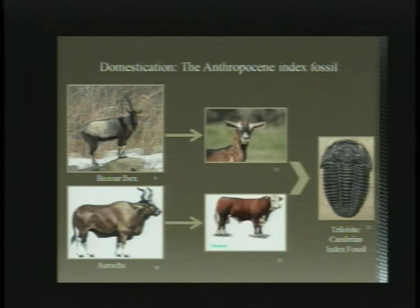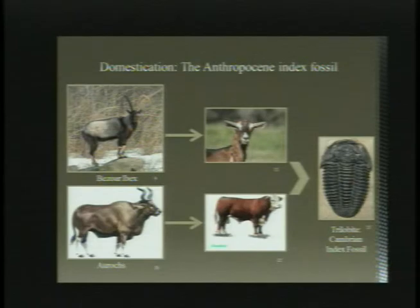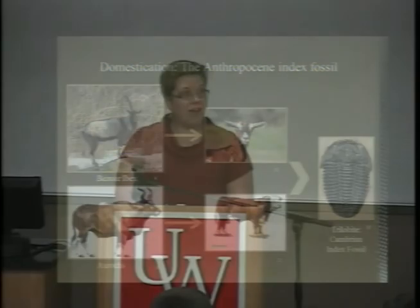Organisms have been domesticated for food, labor, medicine, and more recently for companionship. Selective breeding and genetic modification have changed the makeup of species and will change what is left behind in geologic strata, causing potential index fossils to occur. Humans and agricultural domesticates have had a symbiotic relationship for the past 10,000 years. The rise of agriculture can also be recognized as the emergence of new artificially selected organisms in the stratigraphic record.